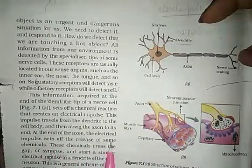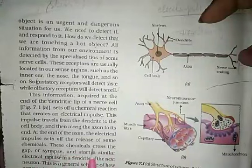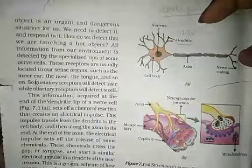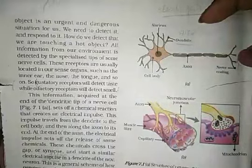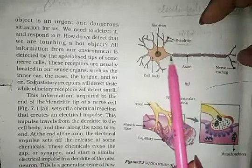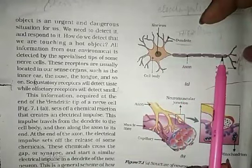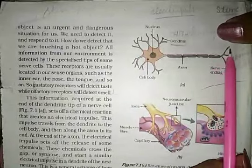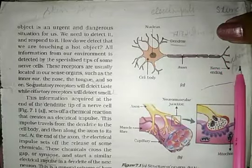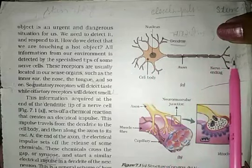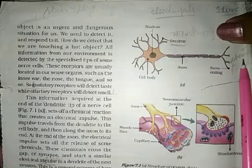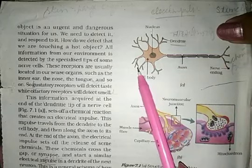At the end of the axon, the electrical impulse triggers the release of some chemicals. These chemicals cross the gap — called a synapse — and start a similar electrical impulse in the dendrite of the next neuron. This is how the signal passes from one nerve cell to the next.